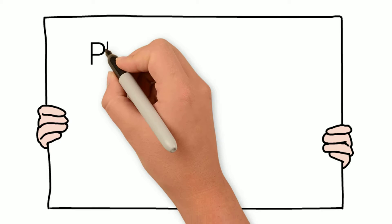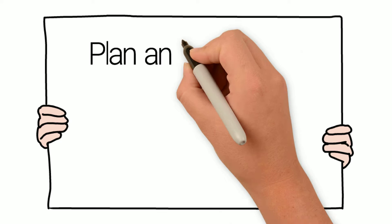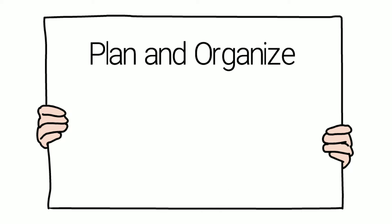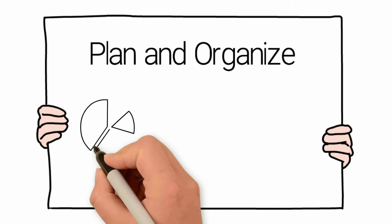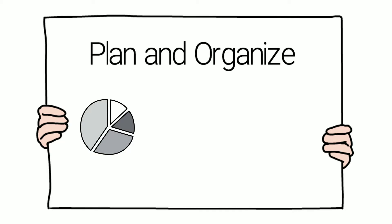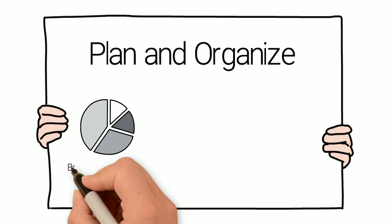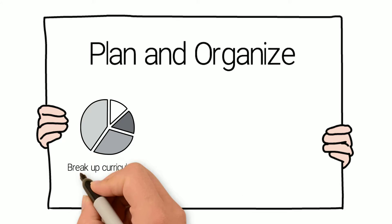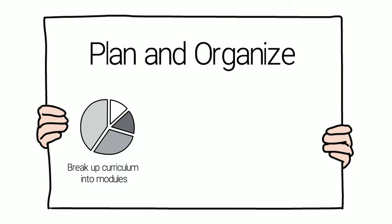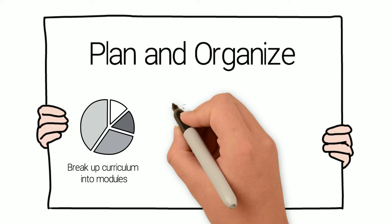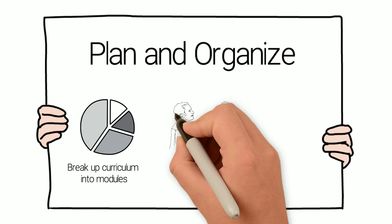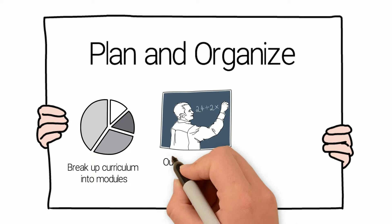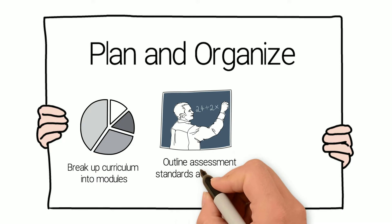First, plan and organize. Much of the success of an online course depends on the quality of your planning. Take your existing curriculum and break up your course materials into short modules that set clear milestones for your online students. Set up your evaluation standards, grading rubrics, and due dates ahead of time, and clearly define them in the basic course materials with your syllabus.